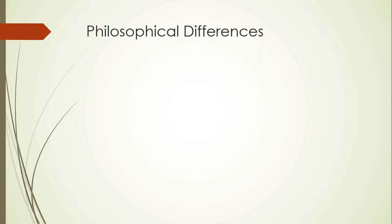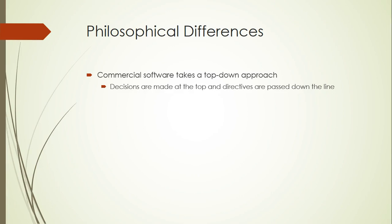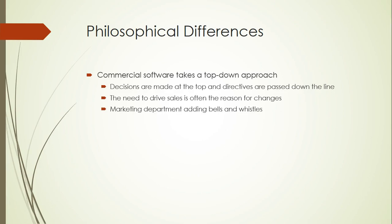There's a large philosophical difference between commercial software and open source software. Commercial software takes a top-down approach — decisions are made at the top and directives are passed down the line. When issues occur, they need to be discussed, meetings called, and decisions made about the best approach, all of which takes a lot of time and energy. Often the need to drive sales is the motivating factor, so marketing departments always want additional bells and whistles that can be advertised, sometimes at the expense of efficient workflows and robustness of the core software capabilities.